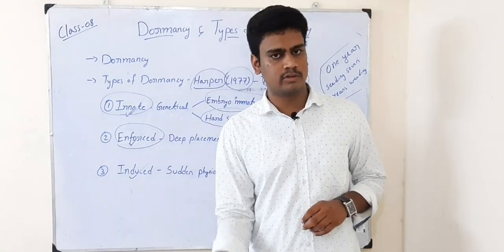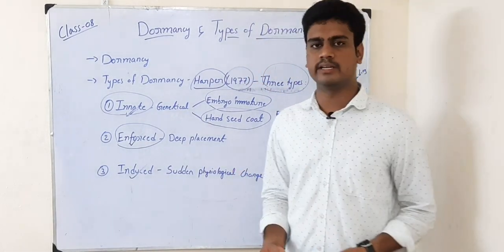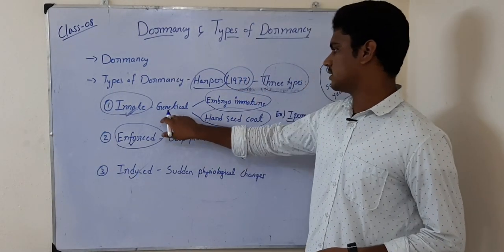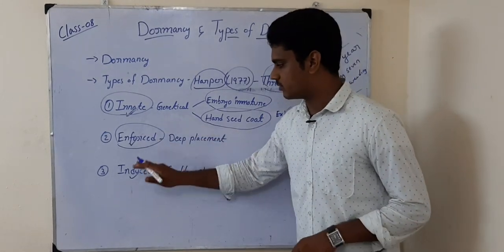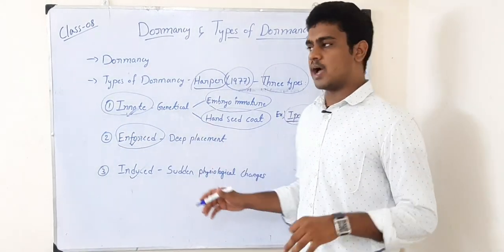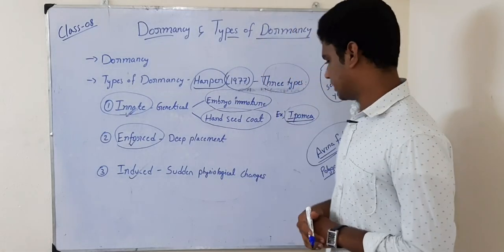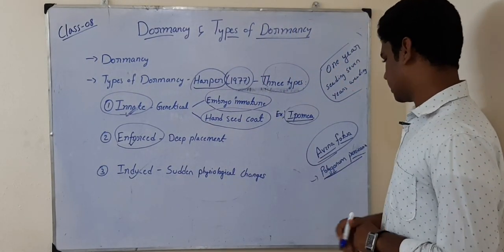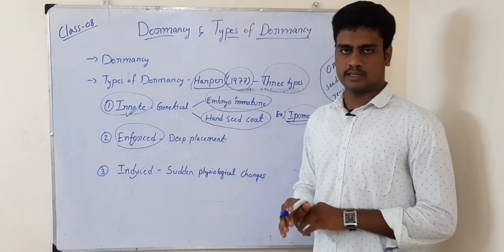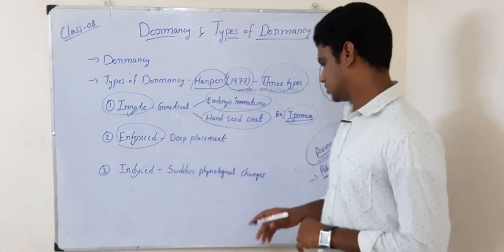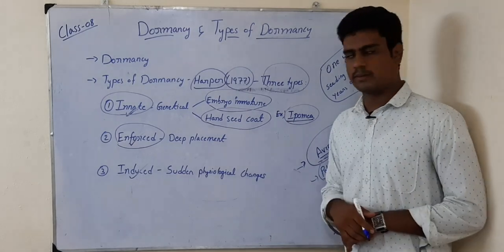An important point to remember: the weed seed that undergoes all three kinds of dormancy — innate, enforced, and induced — is Avena fatua. Another plant that also undergoes all three types of dormancy is Polygonum persicaria (P-O-L-Y-G-O-N-U-M P-E-R-S-I-C-A-R-I-A). In most exams, Avena fatua is the answer asked for this blank, but please also remember Polygonum persicaria as a plant undergoing all three types of dormancy.